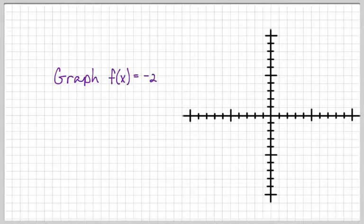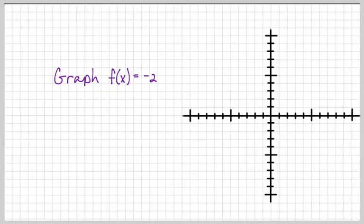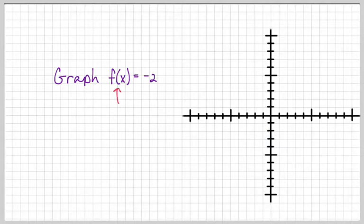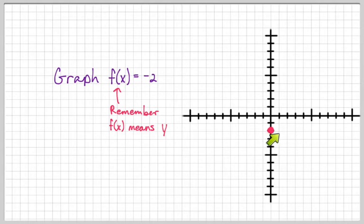Let's graph f of x equals negative 2. Now we know that f of x takes the place of y, so this really says y equals negative 2. I need to find a point that has a y value of negative 2 — that would be right here. So here is my dot at negative 2, and then any other point that has a y value of negative 2, and then I can connect the dots.